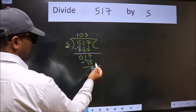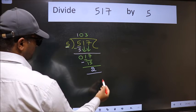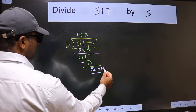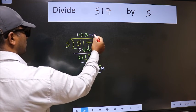No more numbers to bring it down. So we stop here. This is our remainder and this is our quotient.